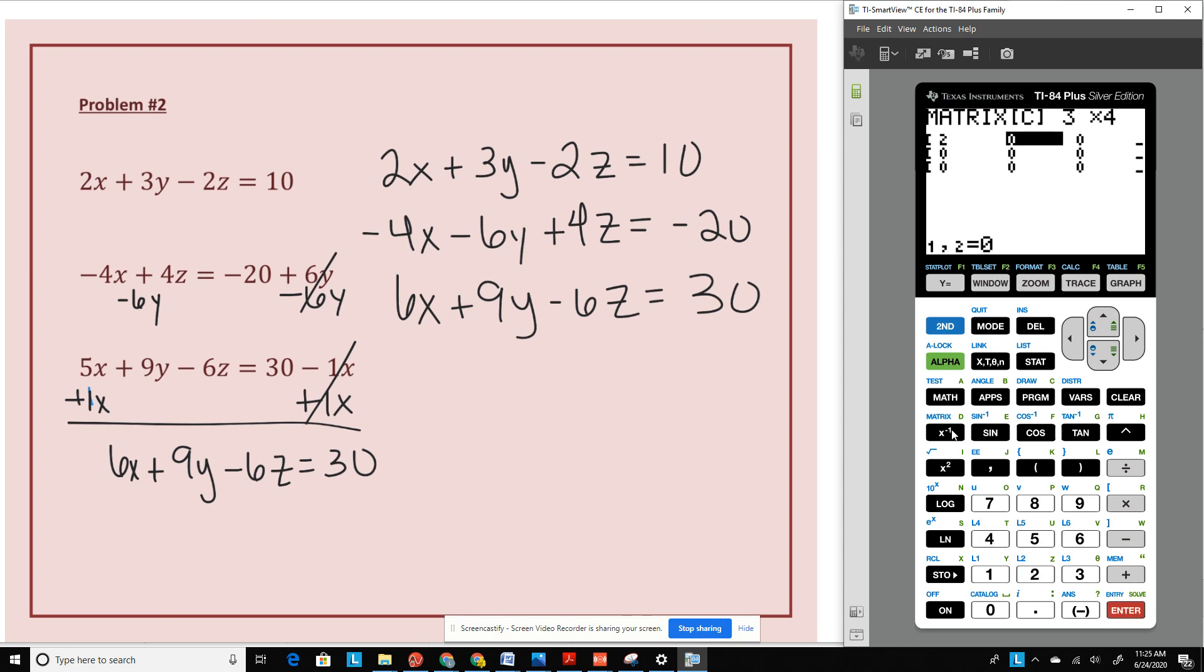My coefficients are 2, 3, negative 2, and 10. My second row, negative 4, negative 6, 4, negative 20. My third row, 6, 9, negative 6, and 30. Remember, that is only saving the matrix into the calculator. So second quit. Now we're going to go back to second matrix. We're going to go to math.